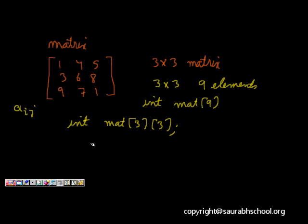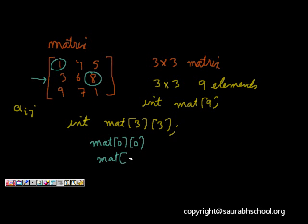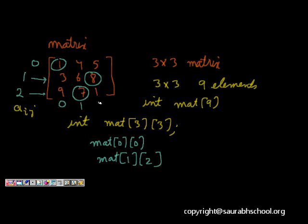With int mat[3][3], the top-left element is mat[0][0]. The element in the second row and last column is mat[1][2]. For element 7, which is in row index 2 and column index 1, we access mat[2][1], which equals 7. This is how you access elements in a two-dimensional matrix.